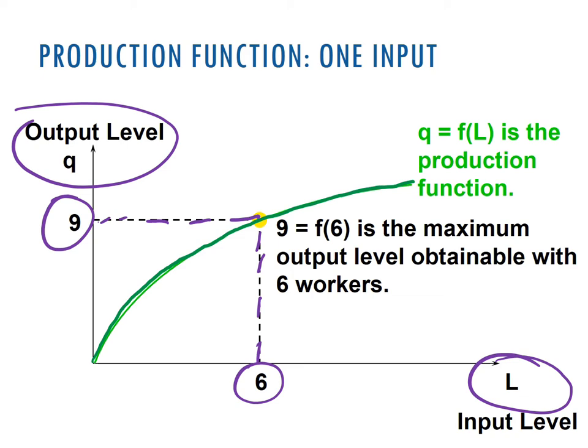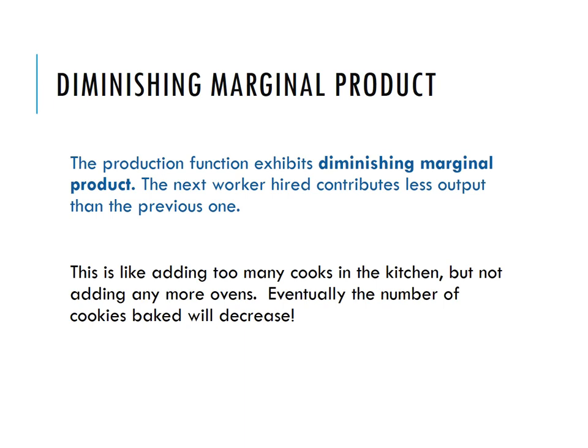This characteristic is pretty common, and we refer to it as diminishing marginal product—in this case, diminishing marginal product of labor. It says that when you hire an additional worker, they might produce more, a positive amount, but they produce less than the previous worker did. The way I think about it is cooks in the kitchen.